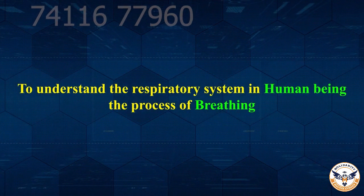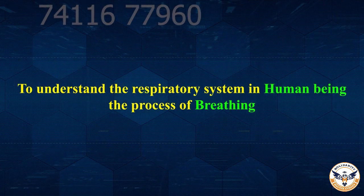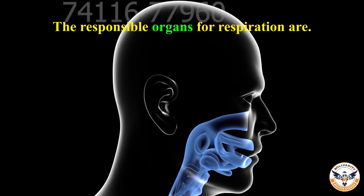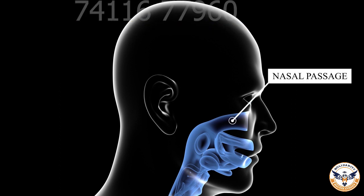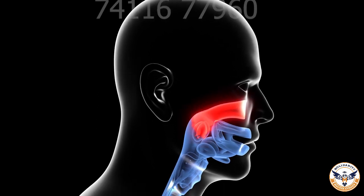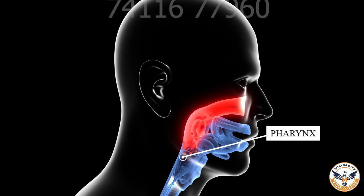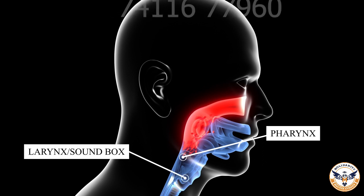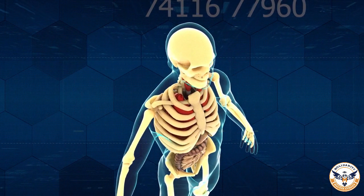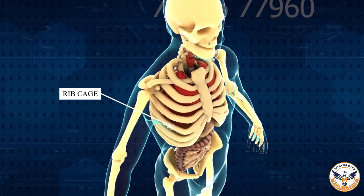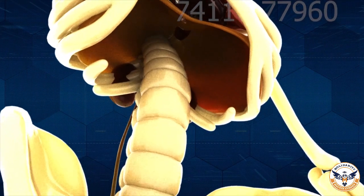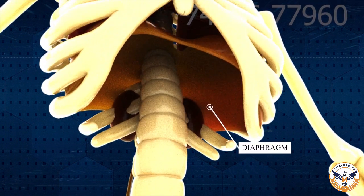To understand the respiratory system in human beings, the process of breathing, and the main responsible organs for respiration are nasal passage, mouth cavity, pharynx, and larynx or sound box, ribcage, and a dome-shaped diaphragm.